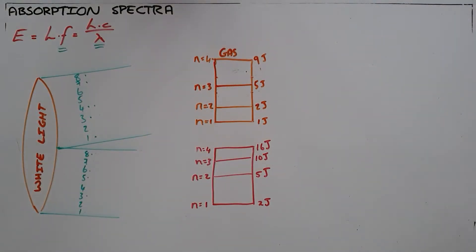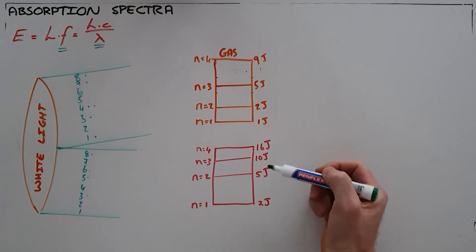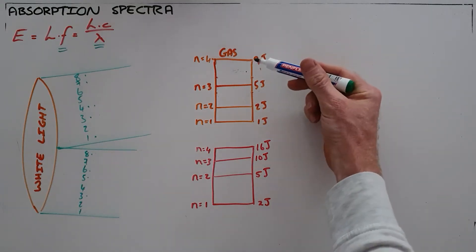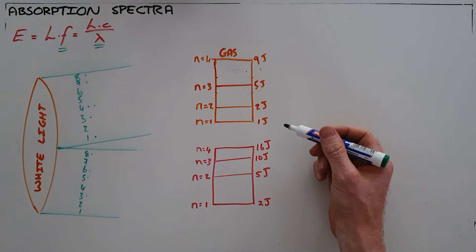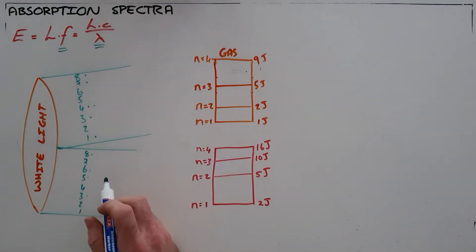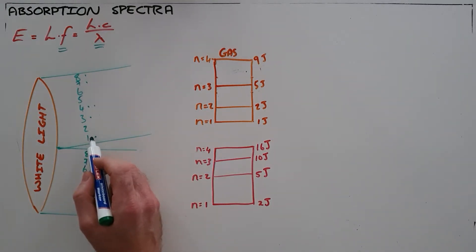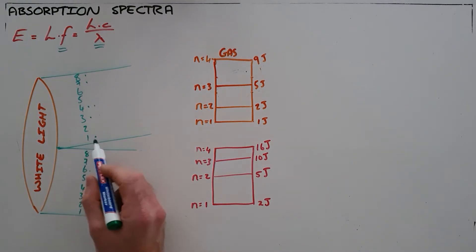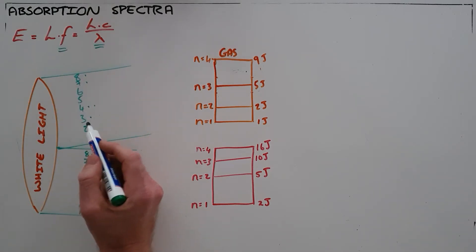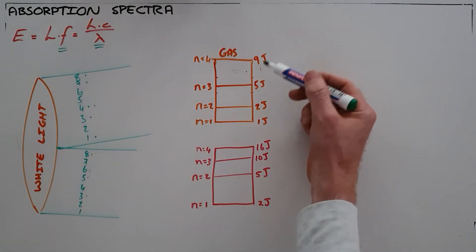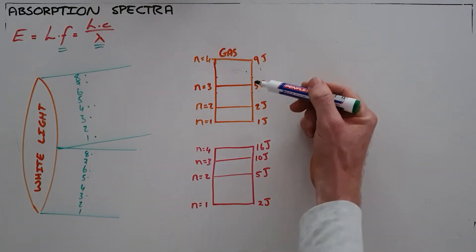We know that it's possible for electrons to absorb photons of light, and that different substances have different energy levels. Here is a simplified model of white light emitting a continuous spectrum of energies — 1 to 8 joules — passing through two different gases.